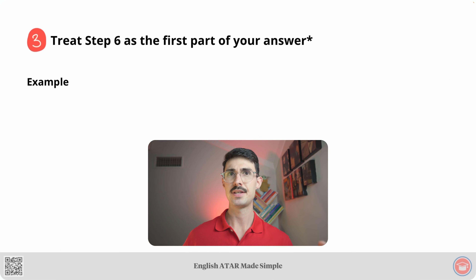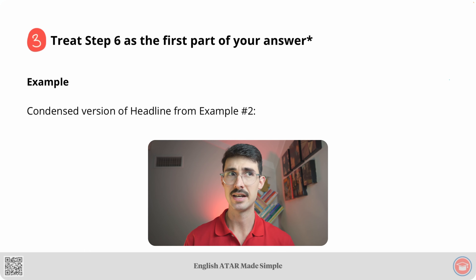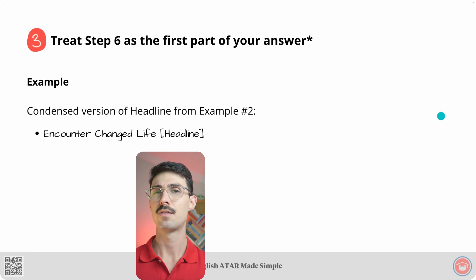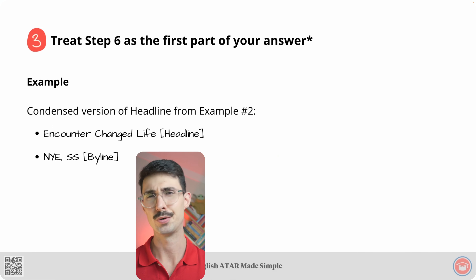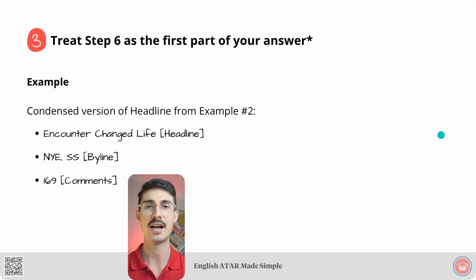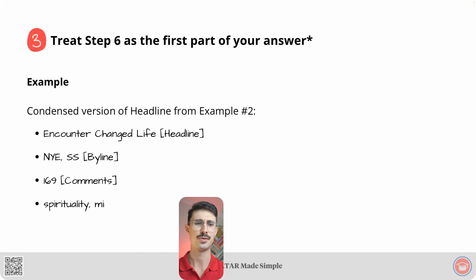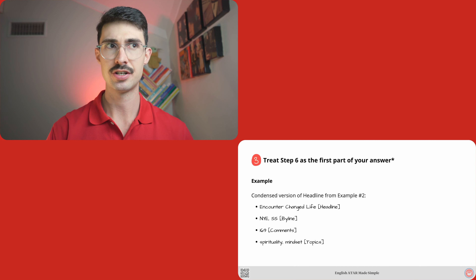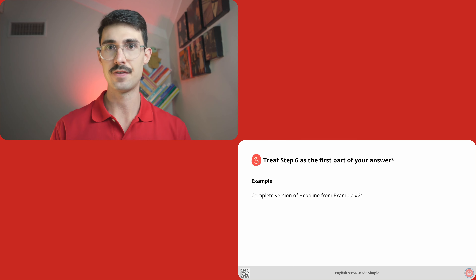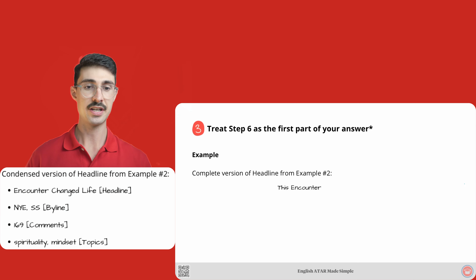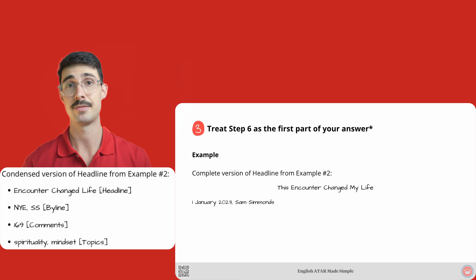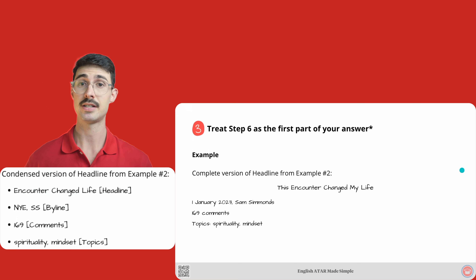Here's an example of what this could look like — a condensed version of the headline from example two. I could simply write 'encounter, change life' for my headline. For the byline, I could write 'New Year's Day' and 'SS' for Sam Simmons, my pseudonym. For the comments, I can simply write '169 comments.' And for the topics, I can write those in full: spirituality and mindset. This process of writing a condensed version in step six helped me fine-tune these elements so I could then write them in complete as the first part of my answer on the next page. The complete version: 'This Encounter Changed My Life' — headline; byline: 1 January 2023, Sam Simmons; 169 comments; topics: spirituality and mindset.